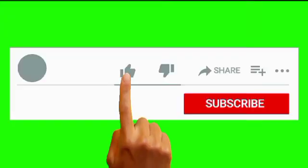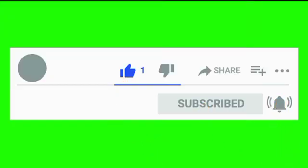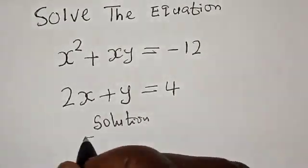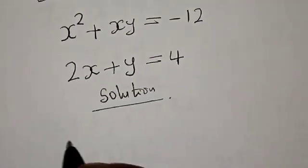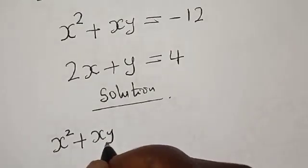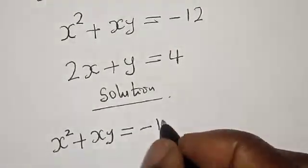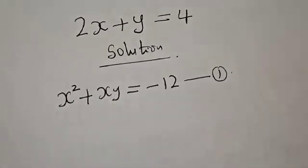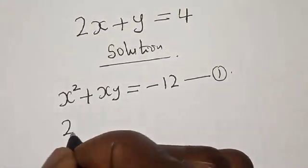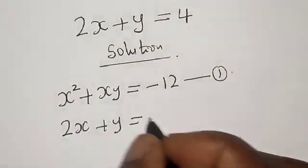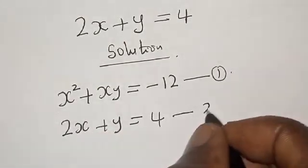But before we proceed, please don't forget to like, share, comment, and subscribe. Thank you. Solution. We have the given equations: x squared plus xy is equal to minus 12 — let's call this equation 1. Then we have 2x plus y is equal to 4 — let's call this equation 2.